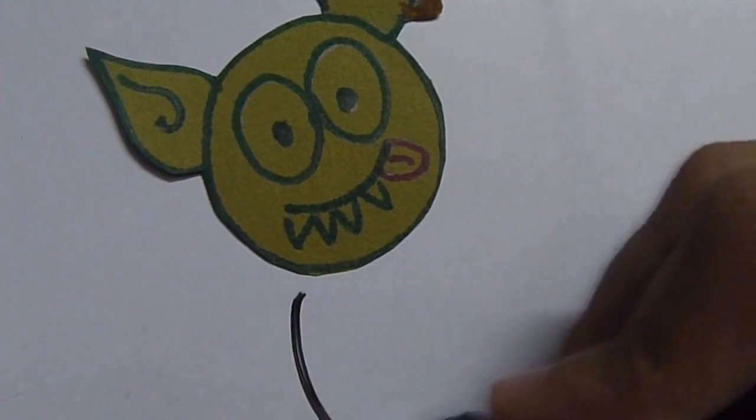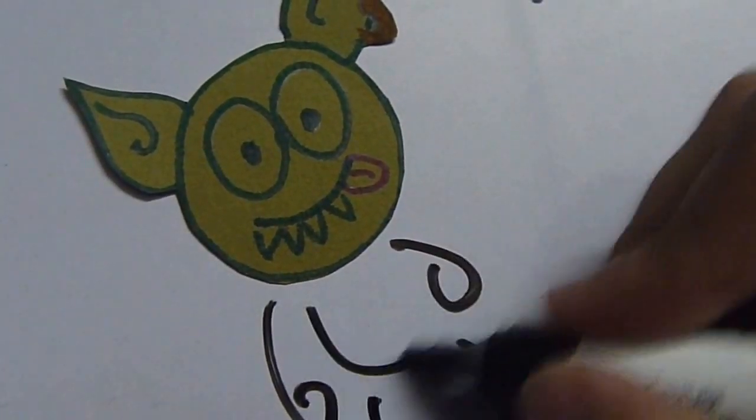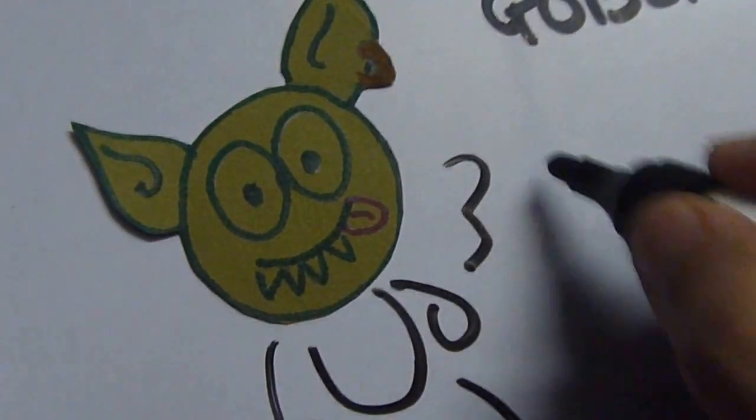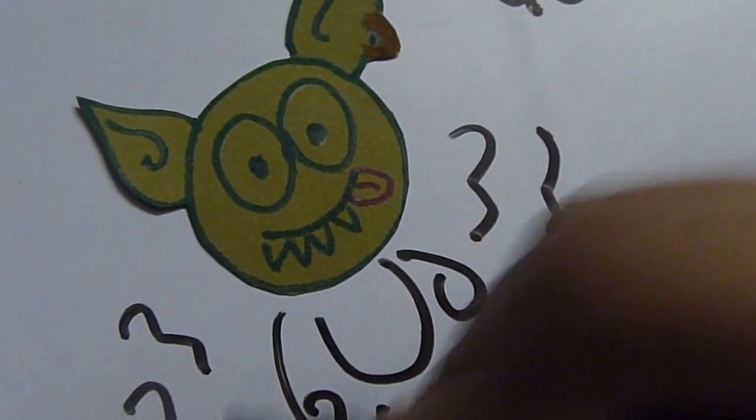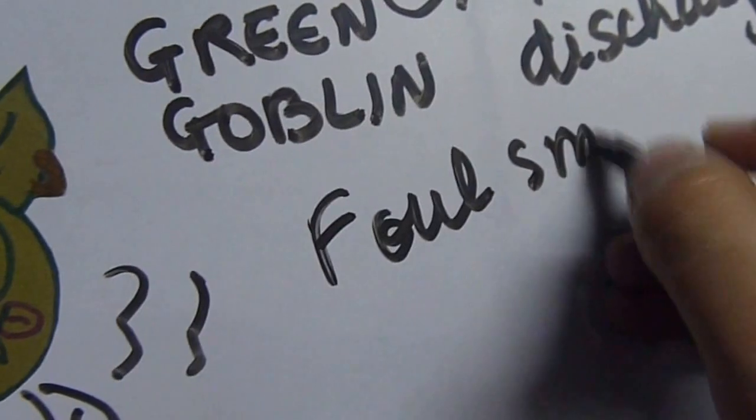For example, if you think of a goblin, it's very unkempt and not very tidy. You can think of it as dirty and dingy and foul-smelling, and that's your keyword for Trichomonas vaginalis infections having foul-smelling discharge.